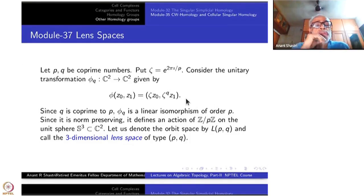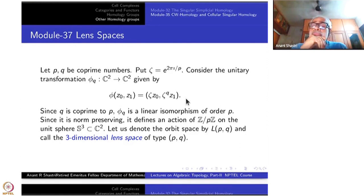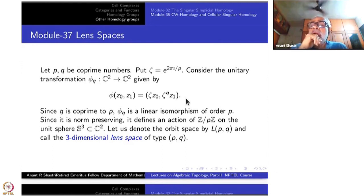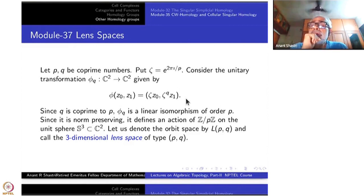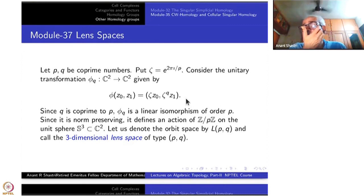Today we shall study the lens spaces, their CW structure, and then use the CW chain complex of that to compute its homology. To begin with, we shall define what is a lens space in dimension 3. We will then extend this definition to higher dimensions as well.